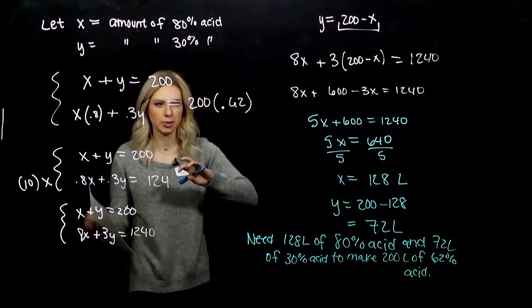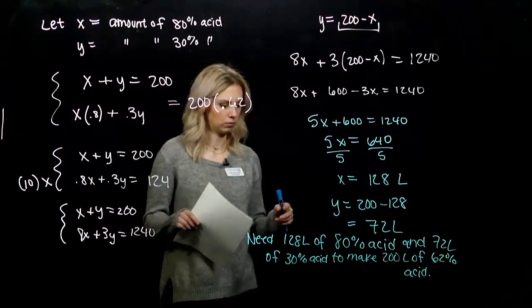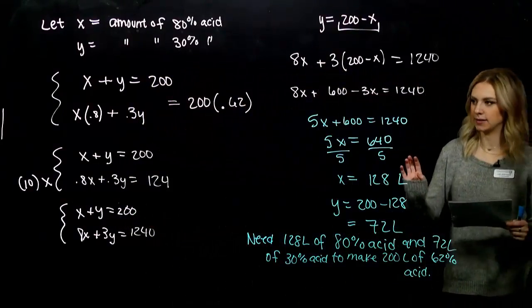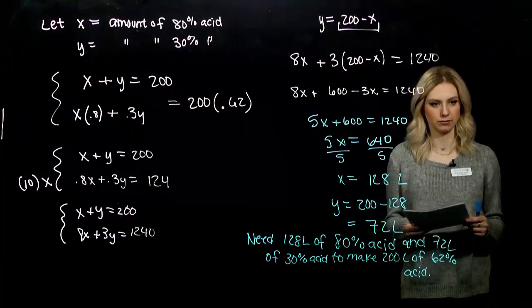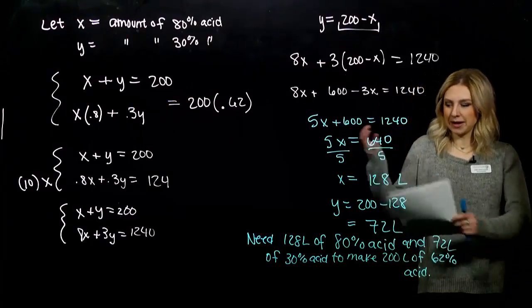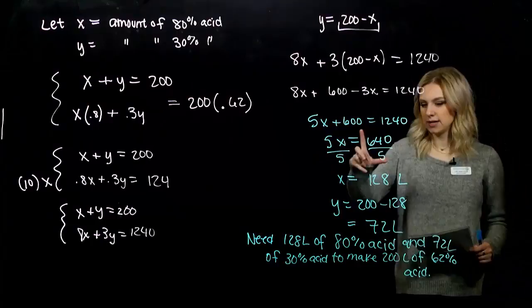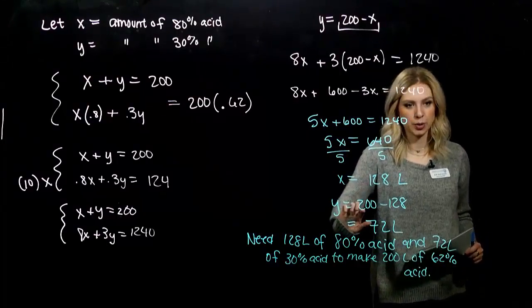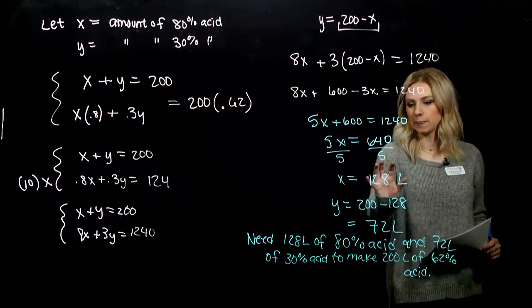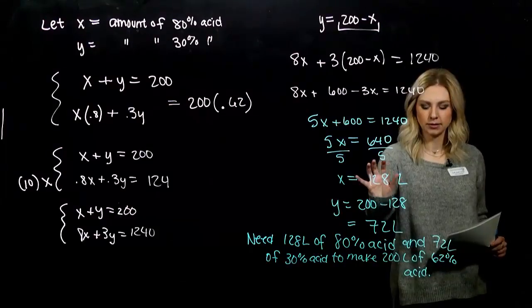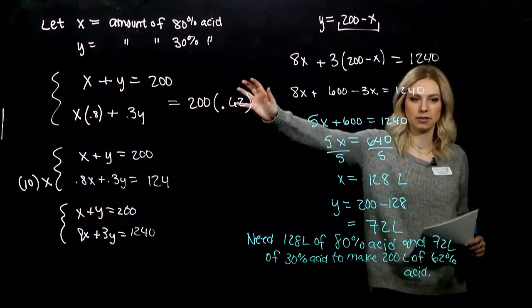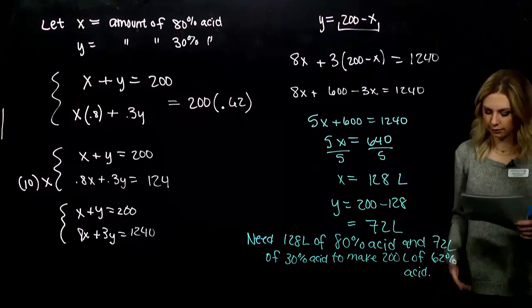So I need 128 liters of 80% acid and 72 liters of 30% acid to make 200 liters of 62% acid solution. We can always plug it back in and check: do these add to 200, and does the acidic part plus the acidic part equal the total acid part?